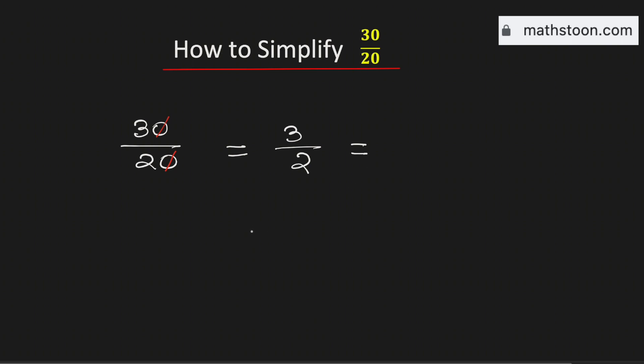To do so, we need to divide the number 3 by 2. 2 goes into 3 by 1 times and if we subtract we get 1.